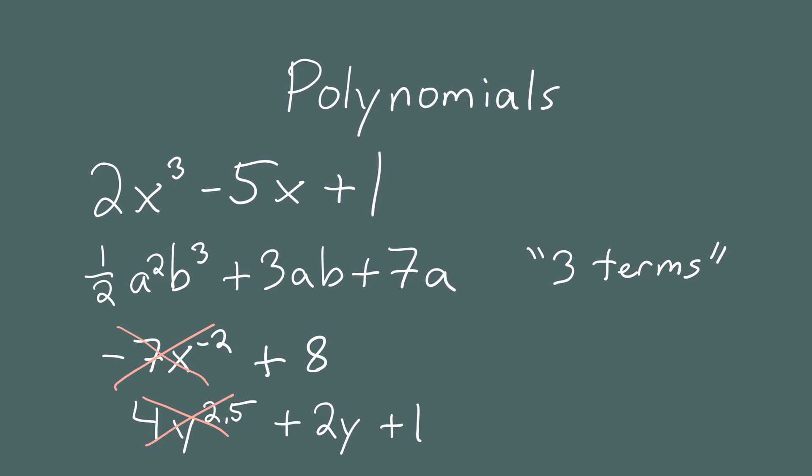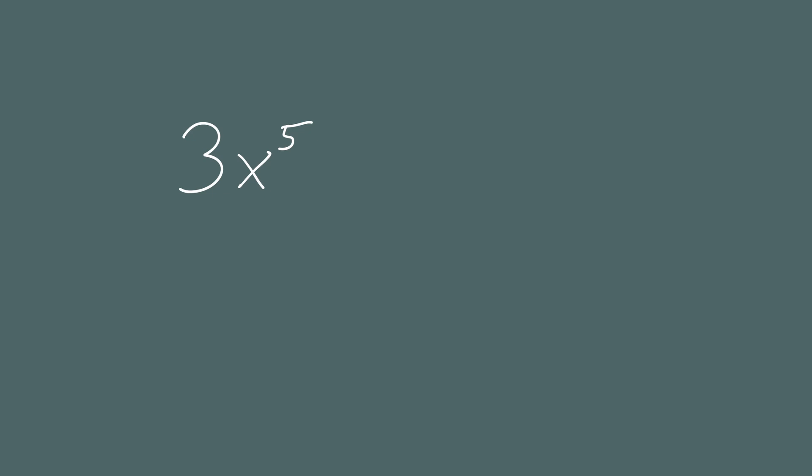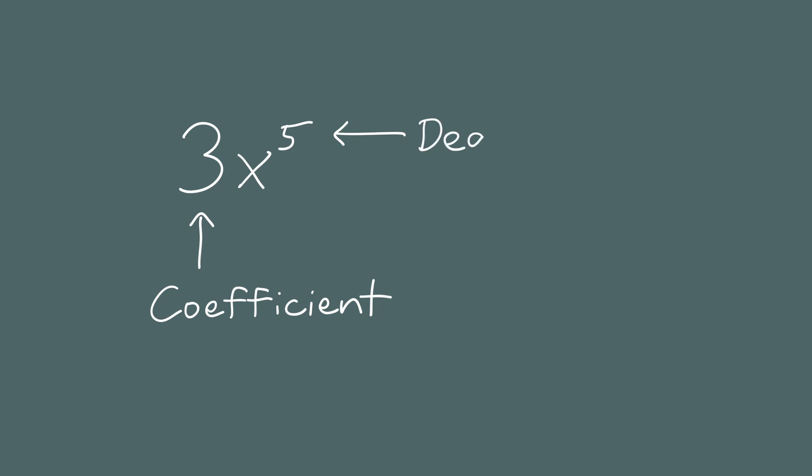Now that we've seen examples of monomials and polynomials, let's introduce a few important words. Looking at the monomial 3 times x to the 5th: the number in front is called the coefficient, the variable is x, and the exponent is 5. There's another term used for the exponent of a monomial: the degree. You'll use the words coefficient and degree quite a bit when talking about polynomials.